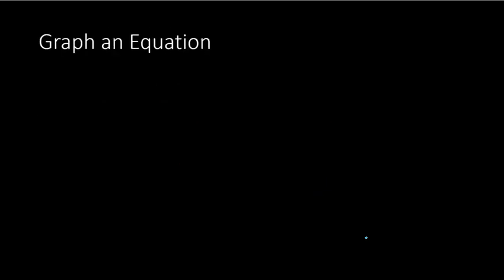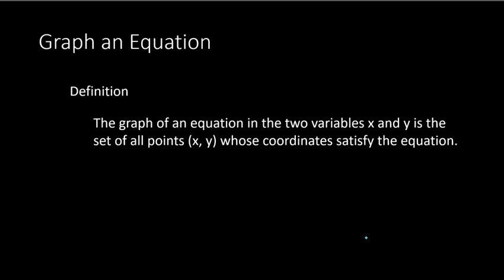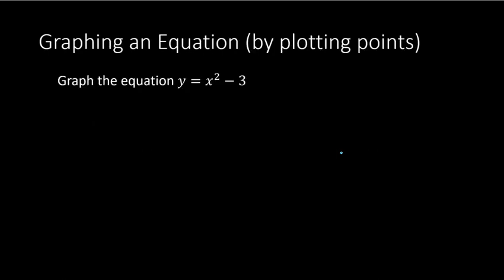Now let's switch to graphing equations. The graph of an equation in two variables x and y is the set of all points (x, y) whose coordinates satisfy the equation. Our approach is to plug in values for x or y and determine the other variable, creating a table of points to plot.